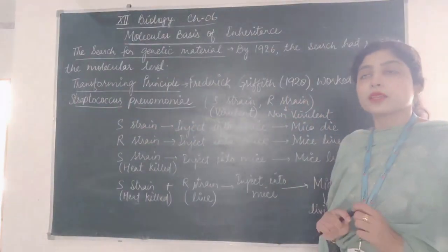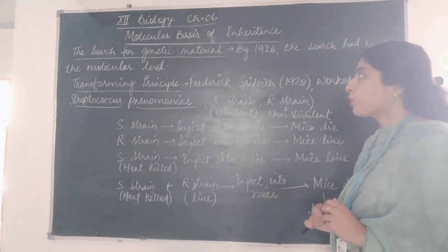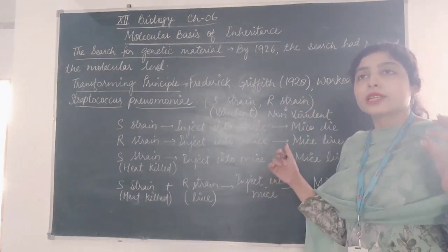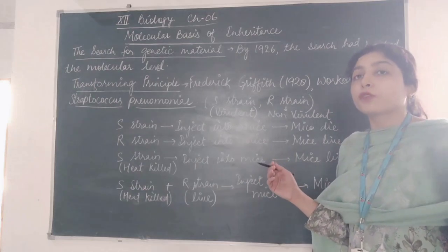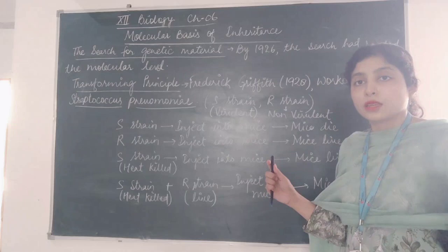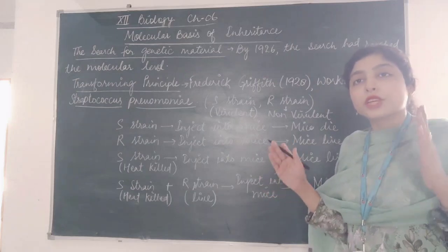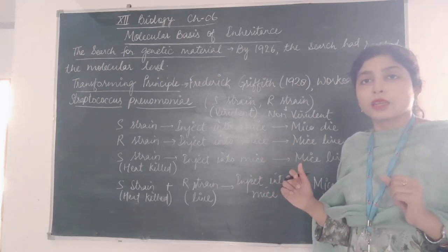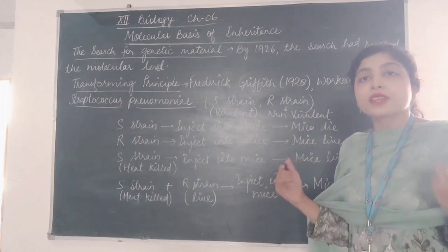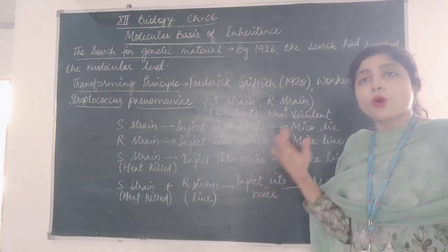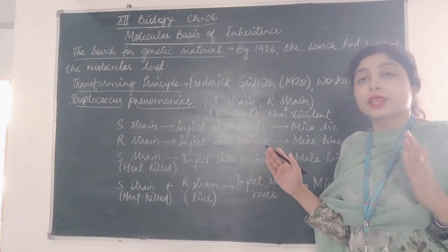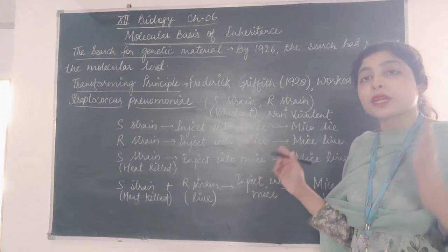The next topic is the search for genetic material. About genetic material, there was no information available to biologists and scientists. We know that genetic material is in our DNA, but people have had to do many experiments to know what the actual genetic material is.